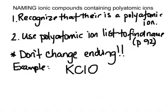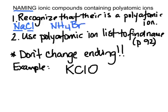Let's walk through naming ionic compounds with polyatomic ions. First, you need to recognize that there is a polyatomic ion. Previously, if we saw two capitals, we knew that was an ionic compound. Now, if we see three capitals, we know one has to be a polyatomic ion. You would look on your polyatomic ion list found on page 92 of your textbook — you will always be given it on the back of your periodic table on any quiz or test. We do not change the ending of a polyatomic ion.